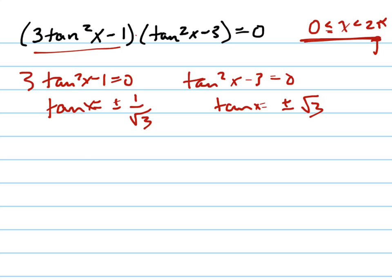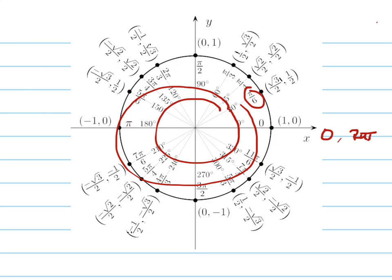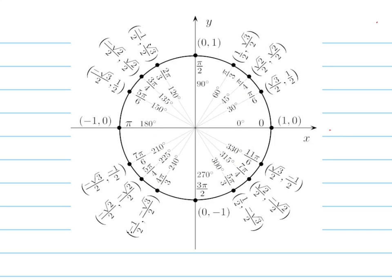Now the question is, where does the tangent equal 1/√3 or -1/√3 or √3 or -√3? Where are those places? Well, let's look at our unit circle, and let's erase this first of all. On our unit circle, the tangent, remember, is the sine over the cosine.